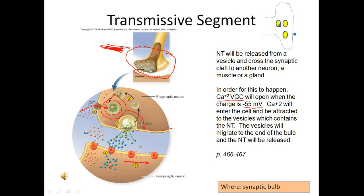Calcium pumps are present to remove calcium from inside the cell — they take the calcium that migrated in and pump it back out. The neurotransmitter, once released across the synaptic cleft, can signal another neuron, a muscle, or a gland to cause something to happen.